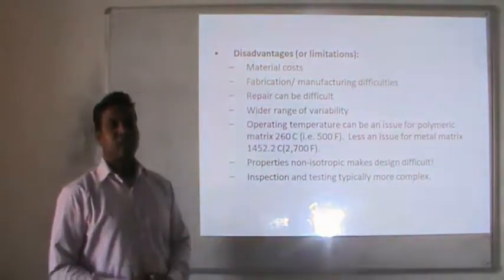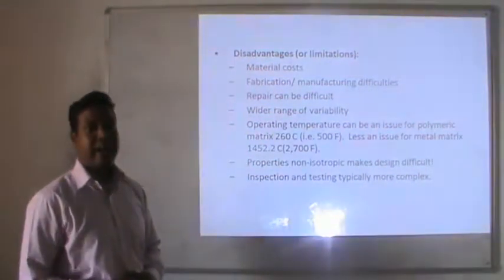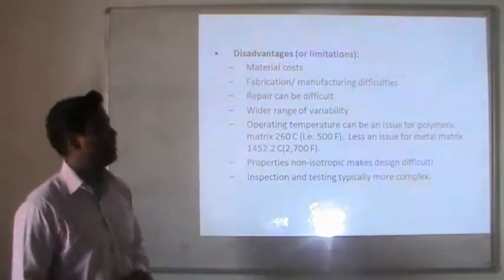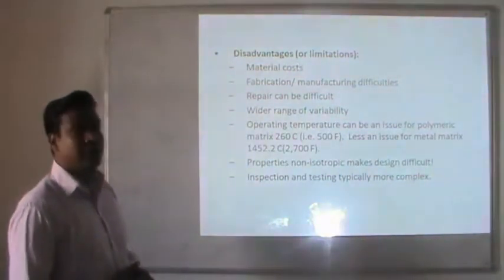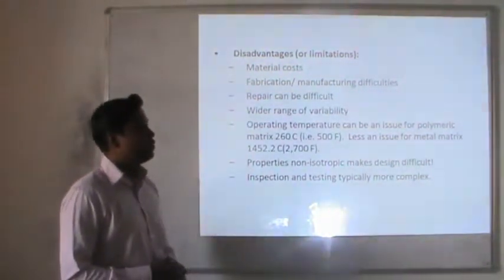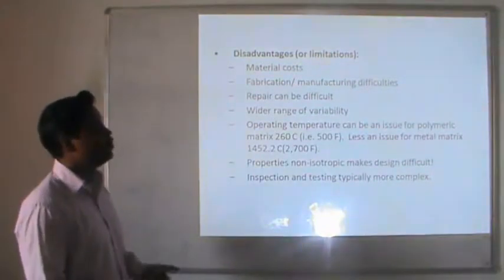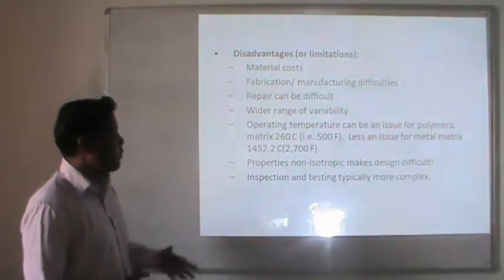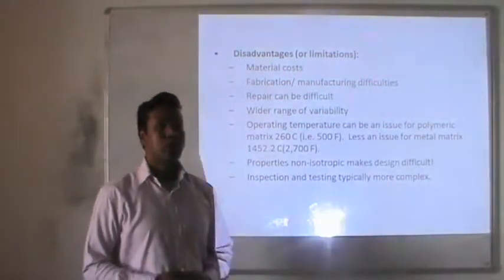Disadvantages of composite materials include very high material cost because the composition of different materials and processing is expensive. There are fabrication and manufacturing difficulties, and repairs can be difficult. A wider range of varieties are available. Operating temperature can be an issue for polymer matrix composites at 260 degrees centigrade, and for metal matrix composites approximately 1452 degrees centigrade. Non-isotropic properties make design difficult, and inspection and testing are more complex.